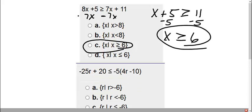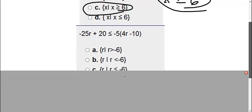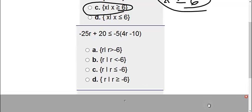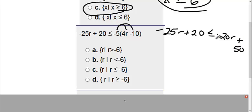Number 2 here. We're solving. So what I need to do is get this r. I need to distribute before I can even do anything. So I have negative 25r plus 20 is less than or equal to, so negative 5 times 4r is negative 20r. Negative 5 times negative 10 is positive 50.